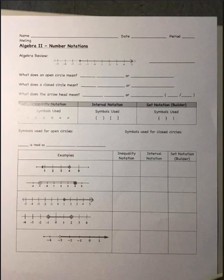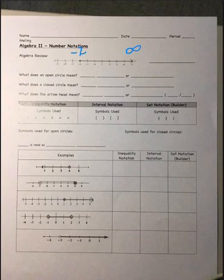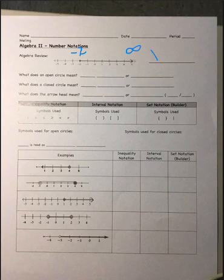We are doing a little bit of algebra review. If you look at the very top where it says algebra review, you can see there is a circle that's filled in with a line pointing to the right. The circle starts at negative 2, and when you see an arrow, that means it goes off to infinity. The filled in circle means it stops at negative 2. Since this is on the x-axis, you would write x greater than or equal to negative 2.